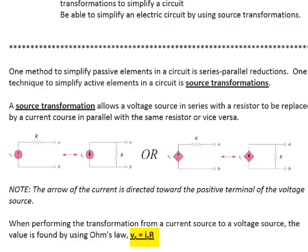If I have a voltage source and I want to convert to a current source, then IS would be equal to VS over R. The resistance stays the same for both circuits.